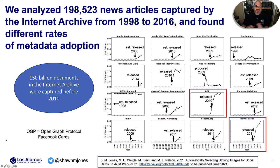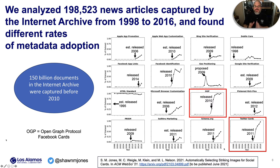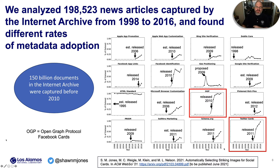We analyzed 198,523 news articles captured by the Internet Archive from 1998 to 2016, putting different metadata fields into different categories. We found that Open Graph Protocol and Twitter Cards experienced enormous growth as soon as they were introduced. News article publishers clearly want to produce cards to drive clicks to their content. Prior to 2010, these standards did not exist, which corresponds to 150 billion documents in the Internet Archive that require some sort of automated summarization.